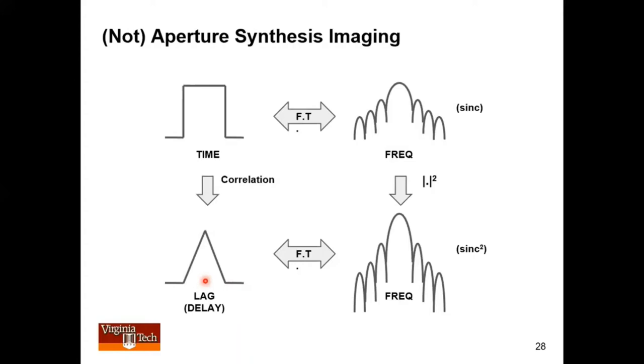Sliding that pulse past itself, that gives you a triangle. And these are no longer times. These are lags or delays. So the center is zero delay. That's the pulse on top of itself. And then any other times, a lag where the pulse is not overlapping. So you get a triangular spectrum. And if you take the Fourier transform of that, you get the power spectral density.